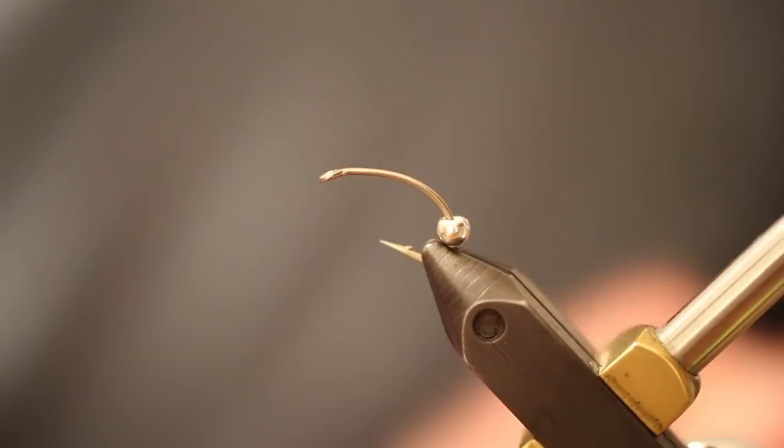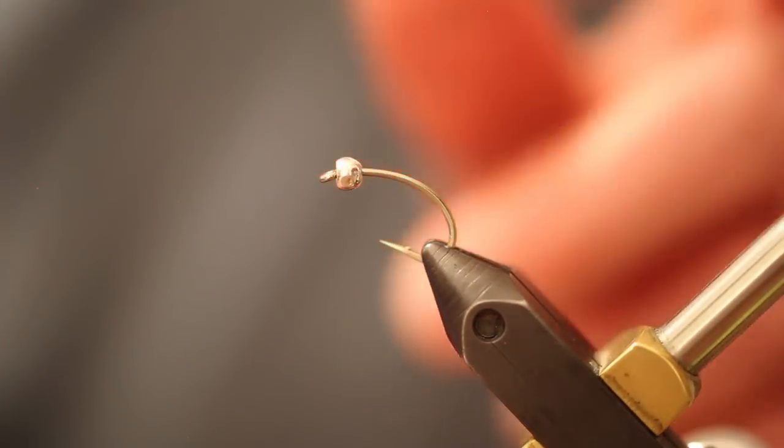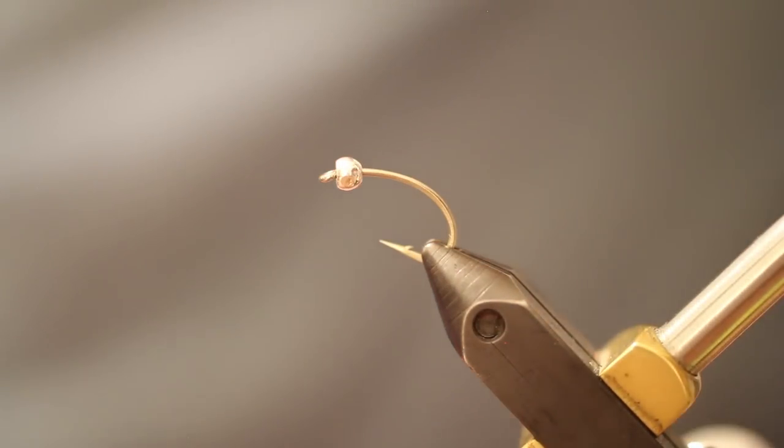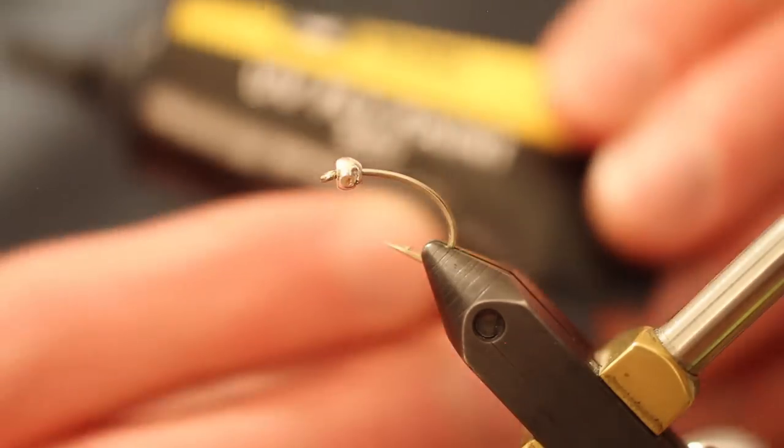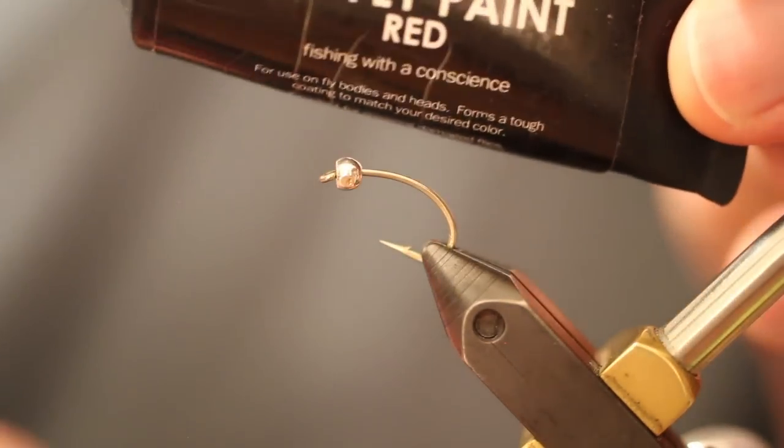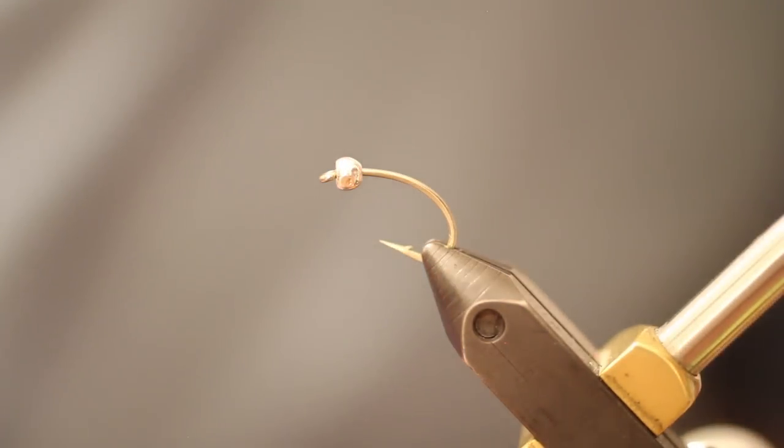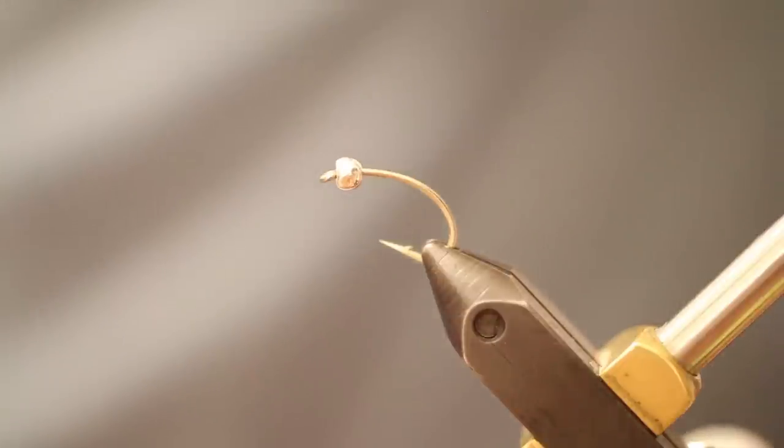Now that that's all said, having this bead on backwards, we're going to use some material called UV Fly Paint by Loon. Red, orange, whatever color you prefer. They do make chartreuse. I don't use it much for this fly, but they do.